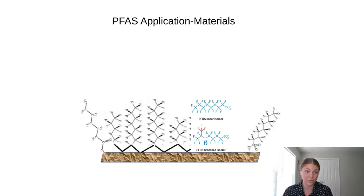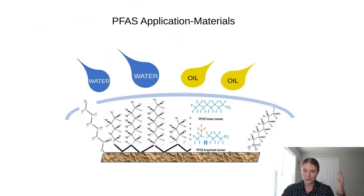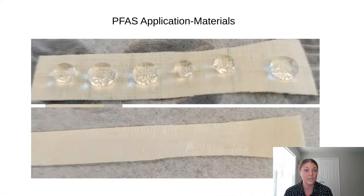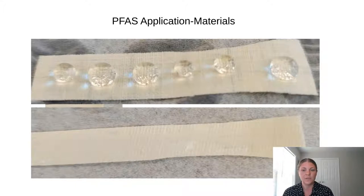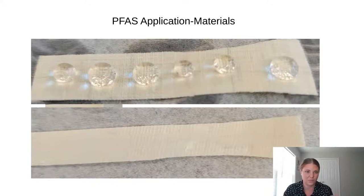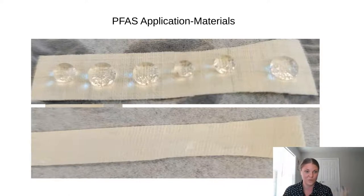This is how a Teflon pan or a waterproof jacket works — the carbon-fluorine chains stick up and the polar head group attaches to the surface. When water and oil are present, they get repelled by the carbon-fluorine chains and bounce right off. As a visual representation, this is a material with one side coated in PFAS — a side-chain fluoropolymer made of PTFE. On the uncoated side, water sprayed on just blobs out. On the PFAS-coated side, water tries to interact with itself to get away from those carbon-fluorine chains.